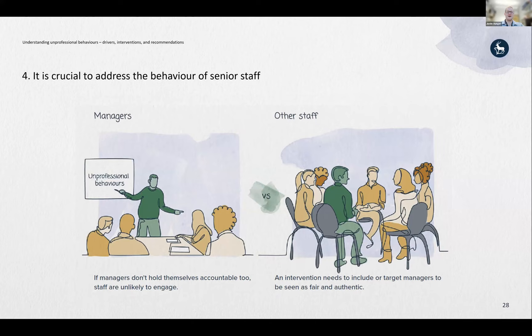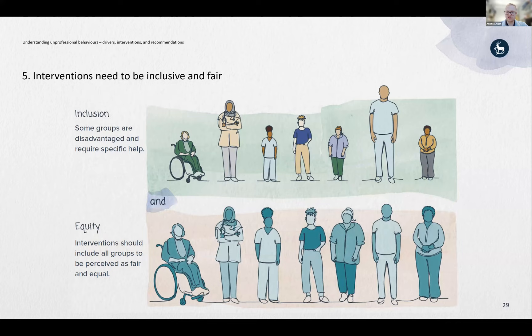It's crucial to address the behavior of senior staff. NHS staff survey data shows that managers are often a source of unprofessional behaviors. Interventions need to include managers and leaders to be seen as authentic and trustworthy. That's often easier said than done — there's a catch-22 situation where the same people who need to introduce these interventions are, in some cases, the ones who've done a poor job of addressing them or who have been seen to behave unprofessionally in the past.